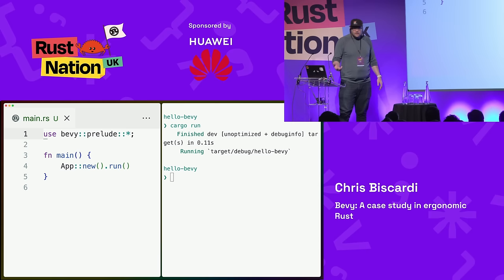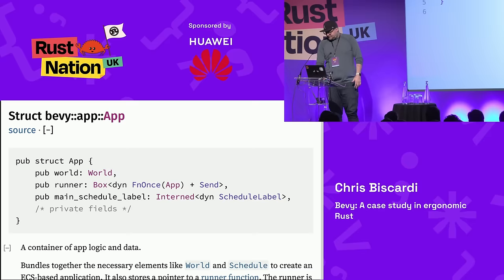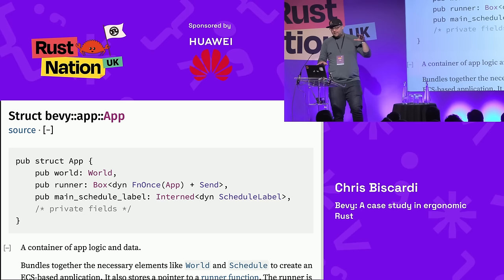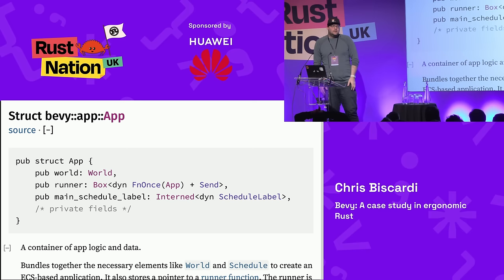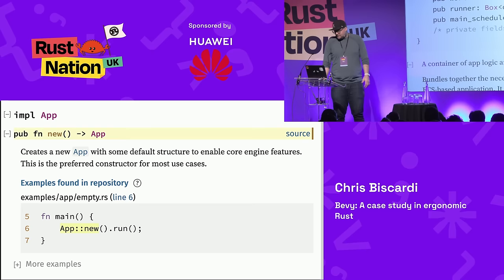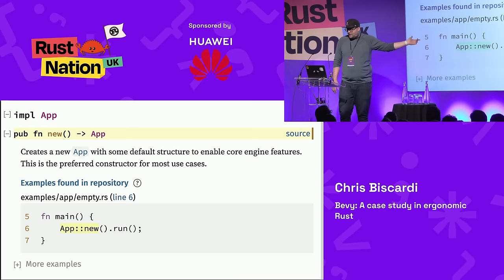Constructing App is our next topic. In this example we see App, which comes from the prelude. We've got `new`, and something that kind of looks like the beginning of a builder pattern. App is difficult — almost impossible — to construct manually because it has private fields. Even if you look at world, box dyn fn once, and the intern dyn schedule label thing, if you're a new person starting a new Bevy project, it's not something you want to manually construct. So `new` is the way we do that in Bevy.